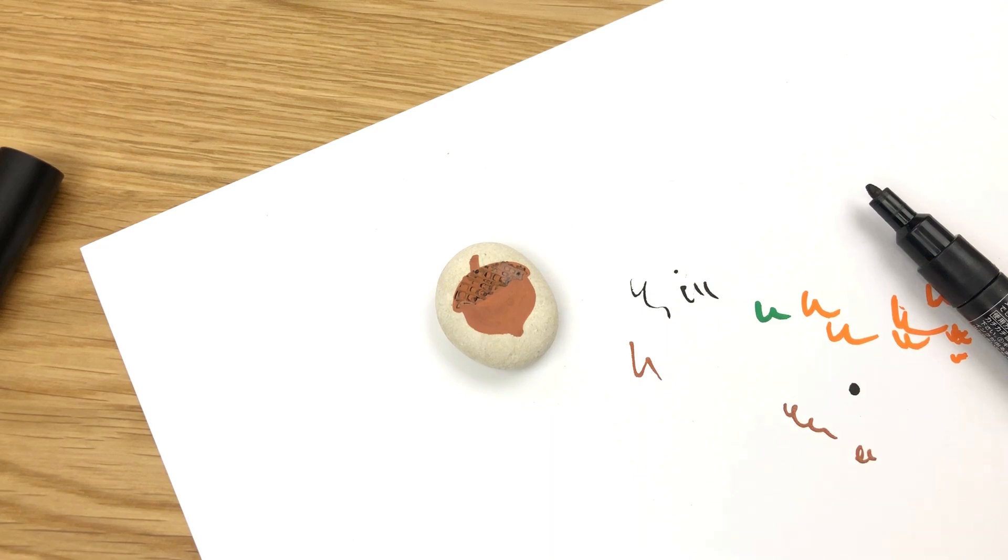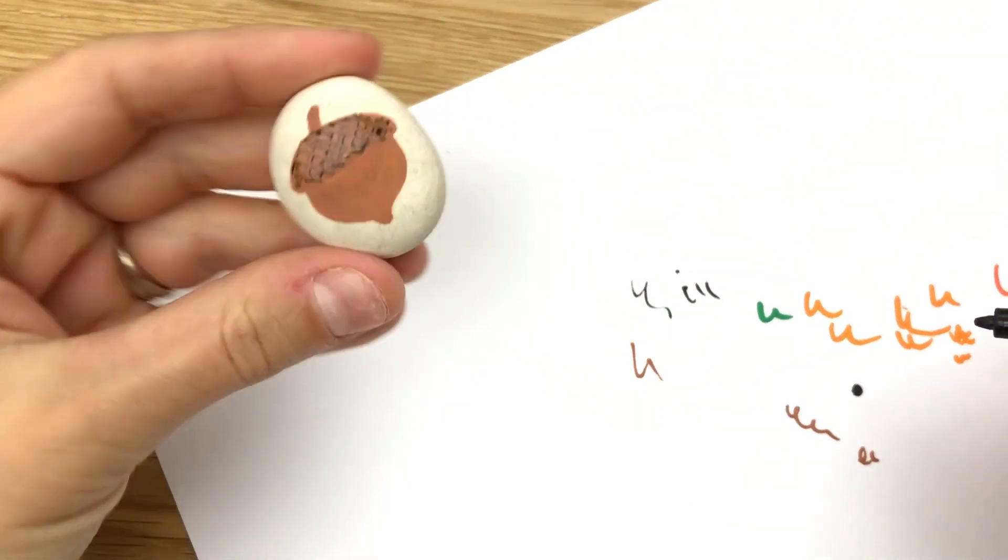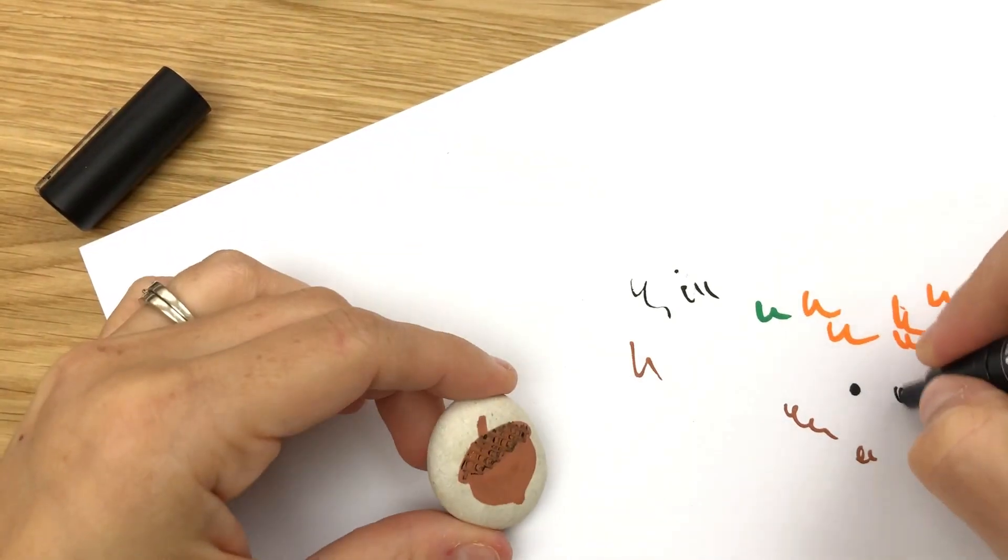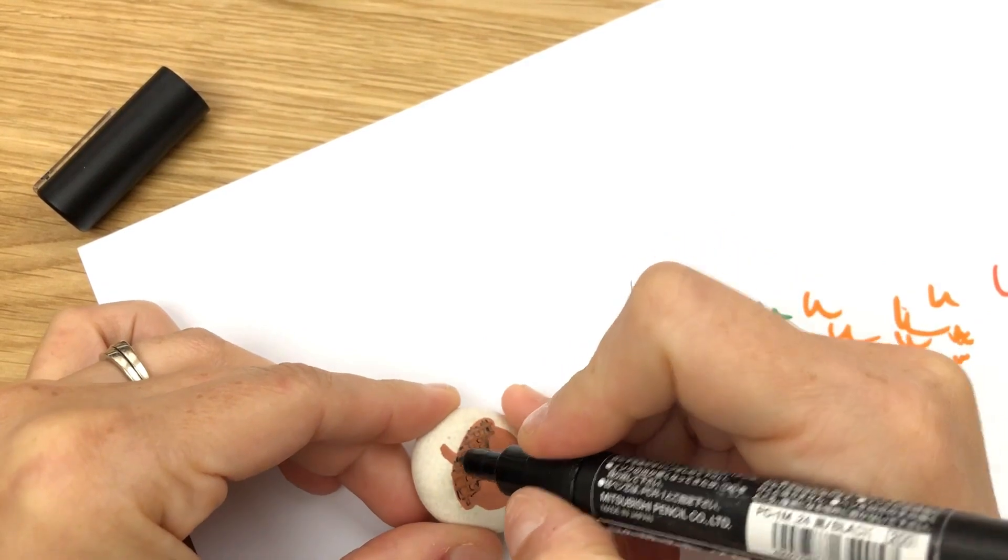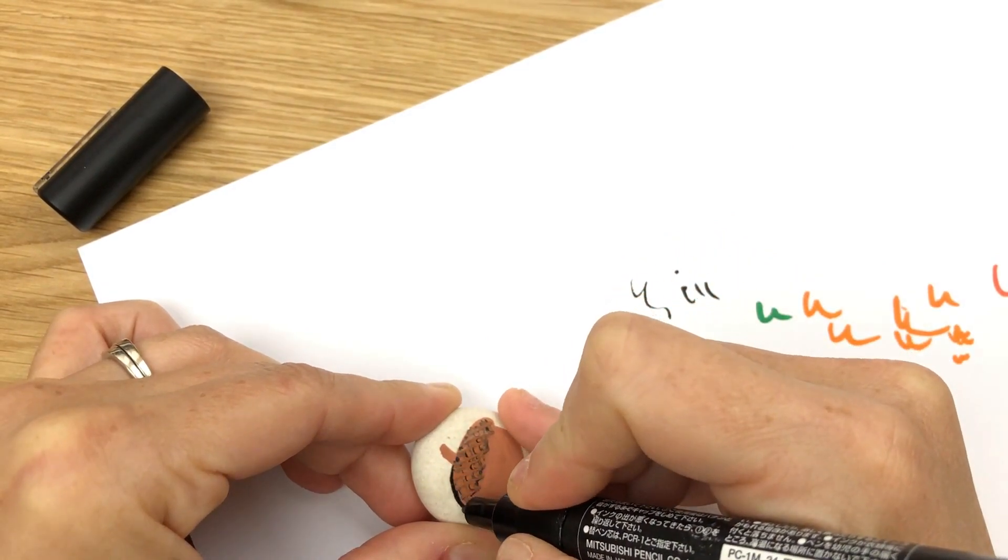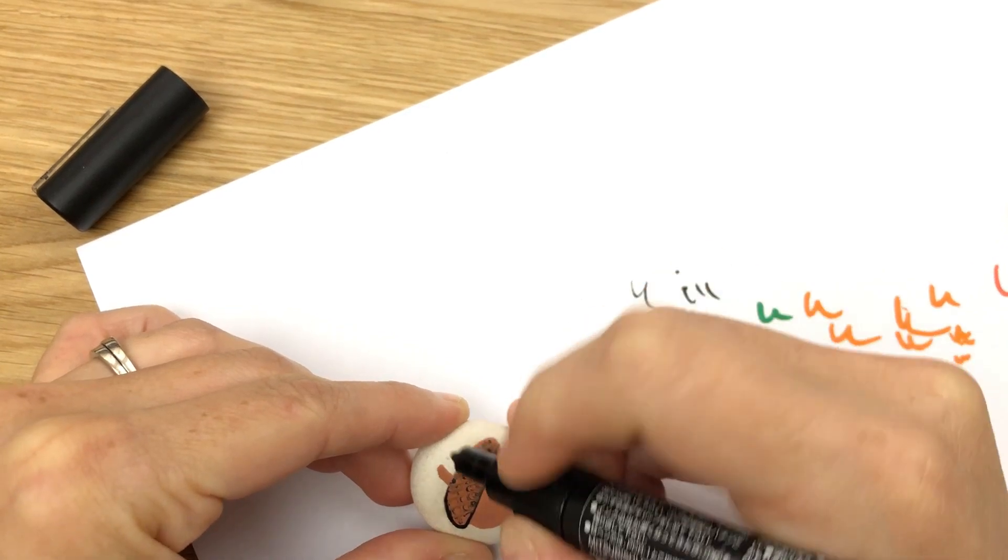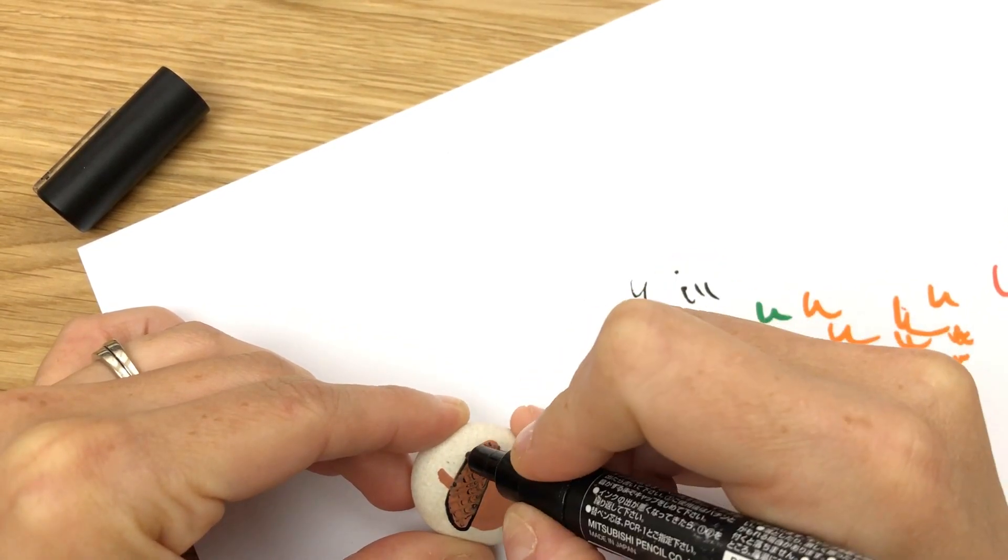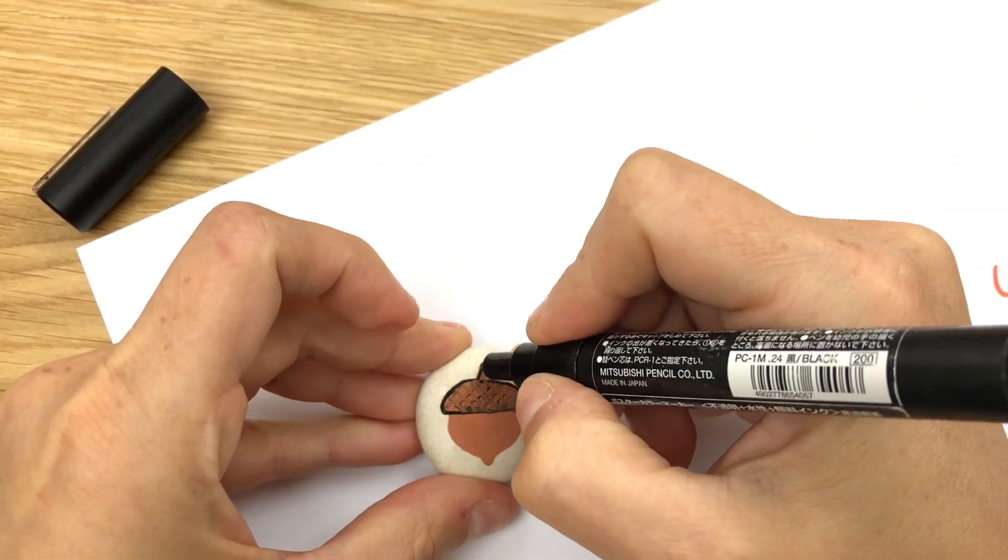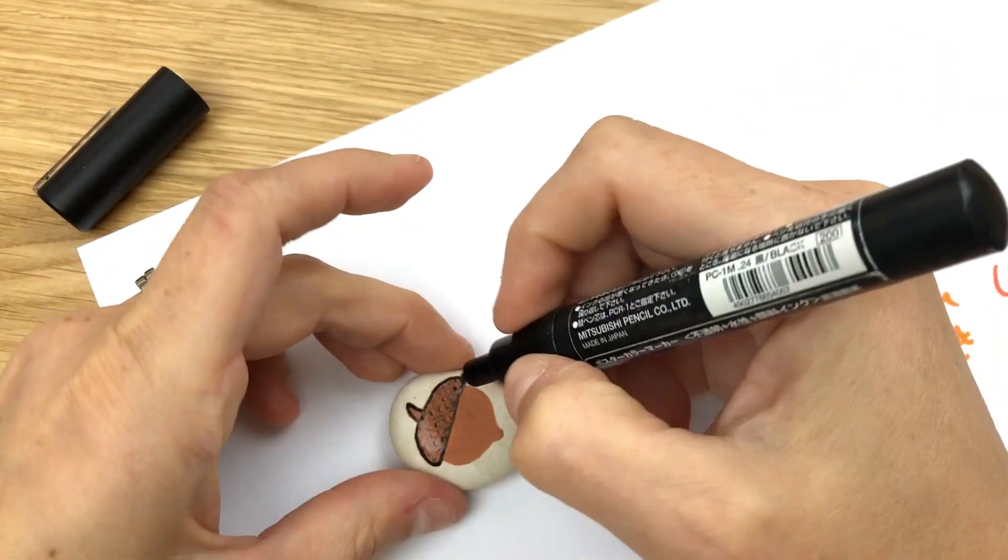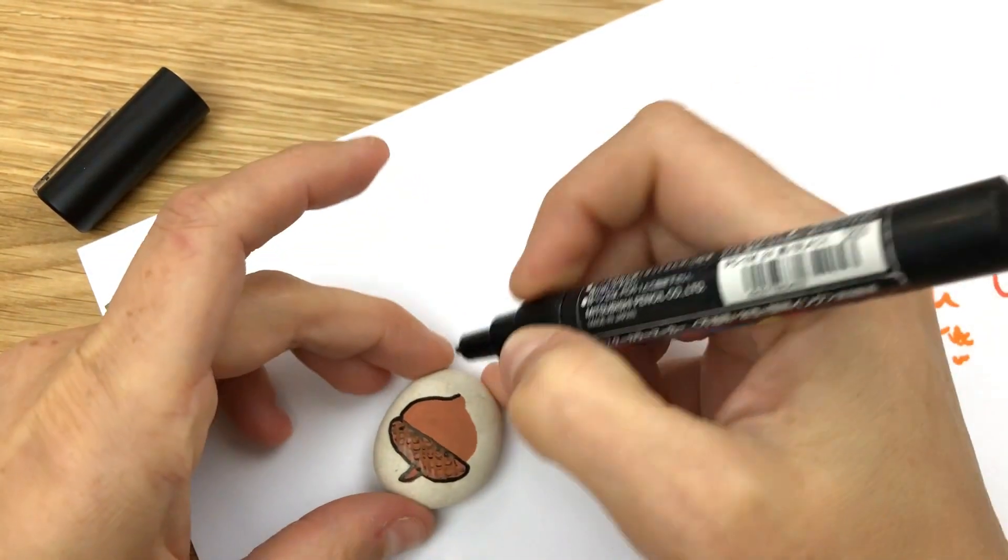So we've got our basic acorn there. And now I'm just gonna line the edge just to give it the definition down there. We're gonna go around our stem here, down around the bottom.